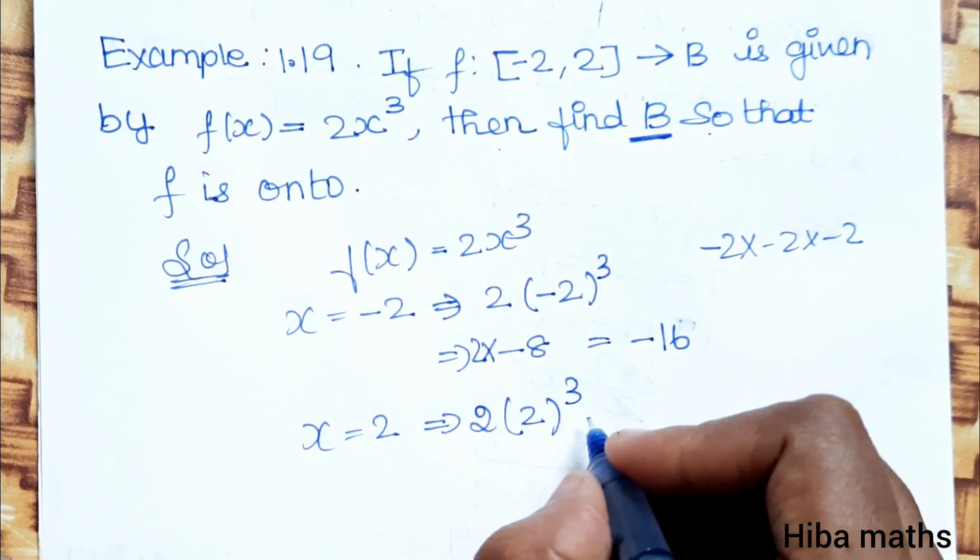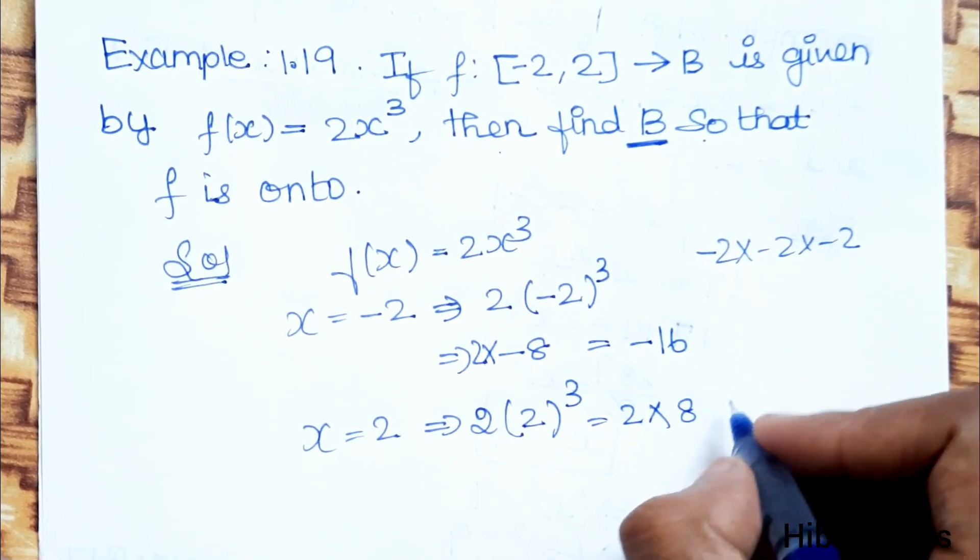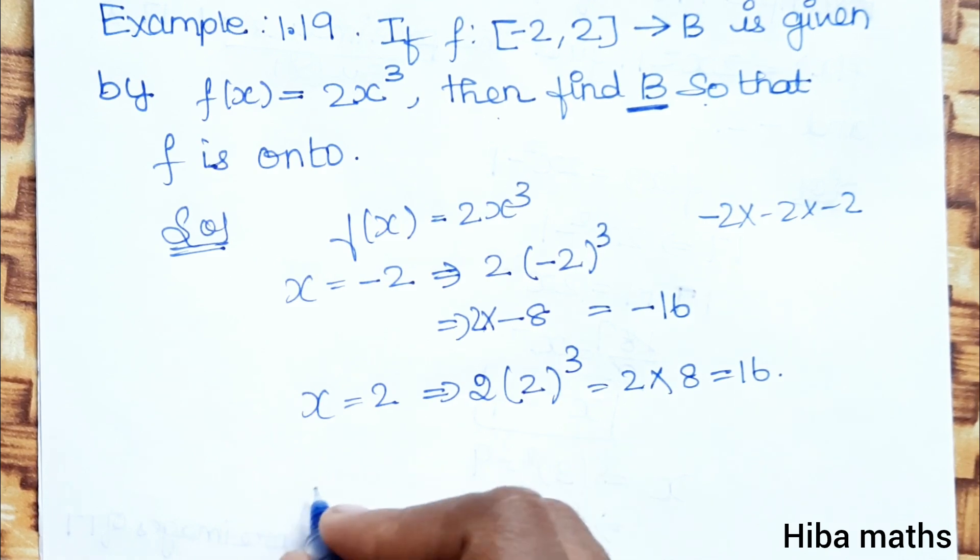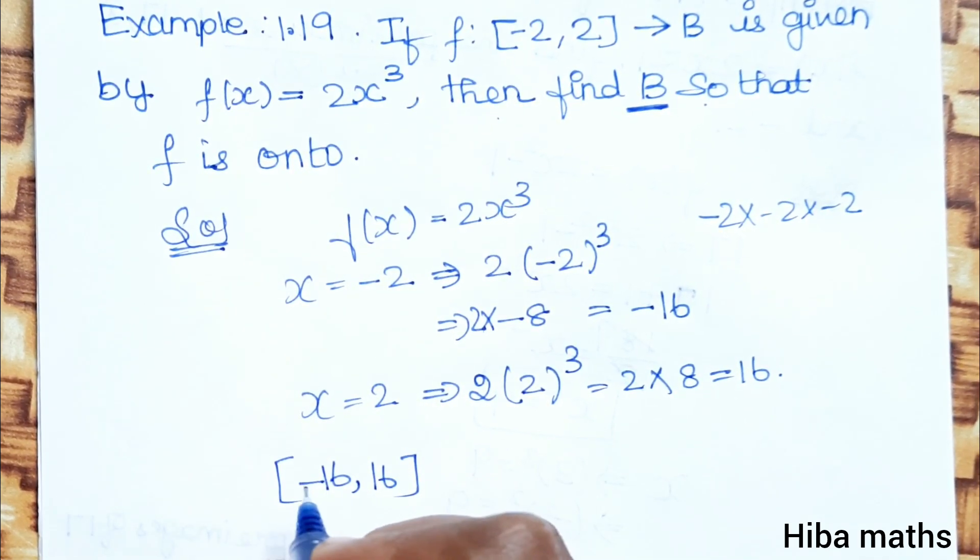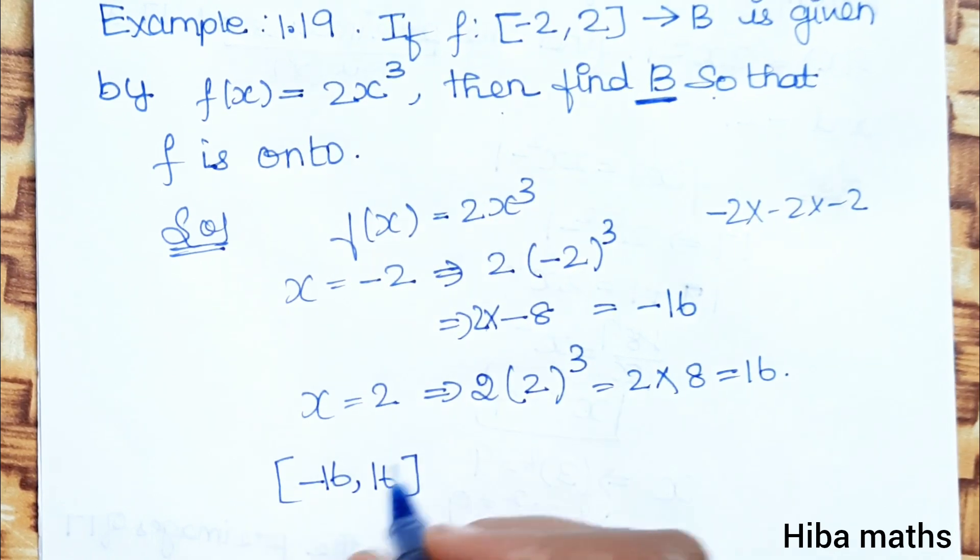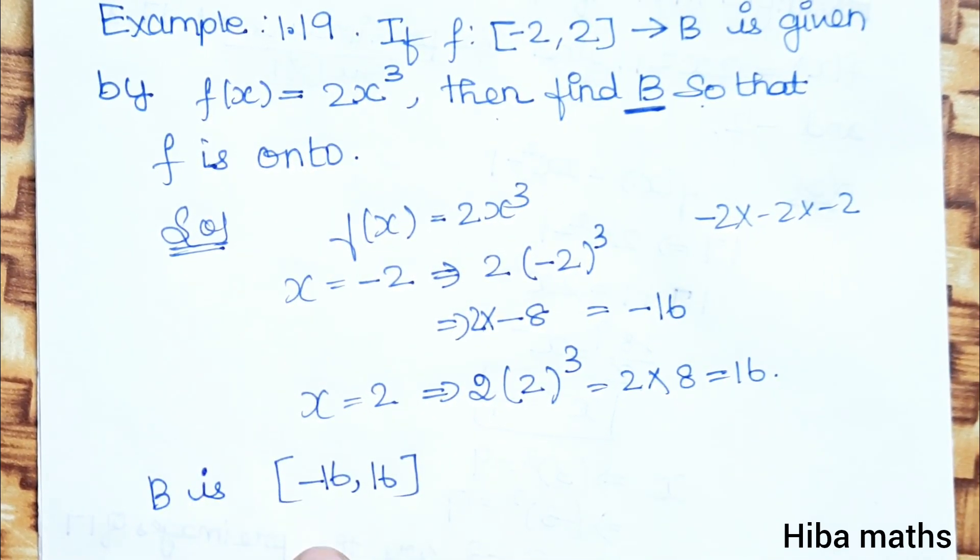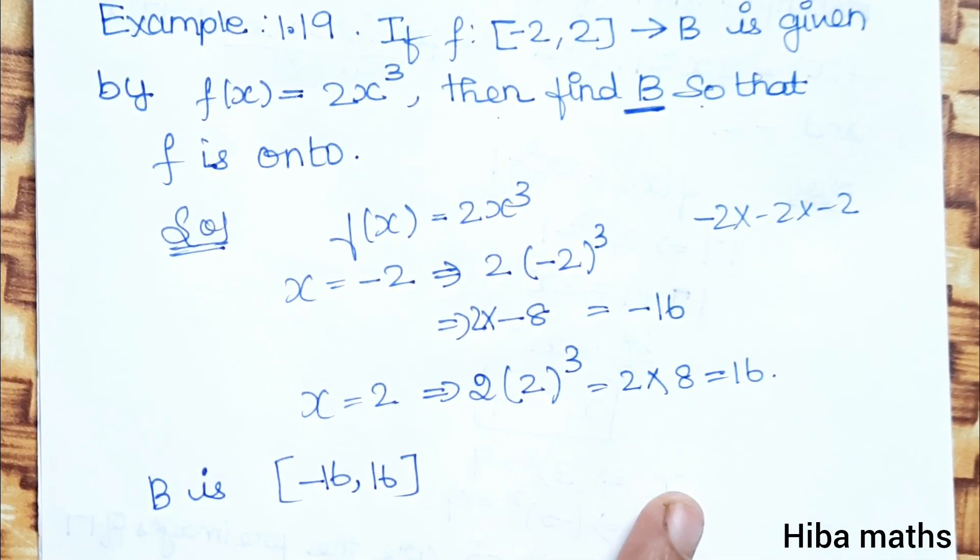Then for x = 2: 2 × 2³ = 2 × 8 = 16. So B is [-16, 16], and that makes f onto.